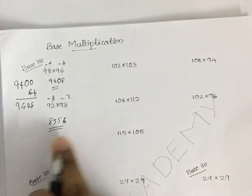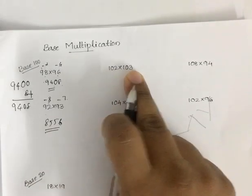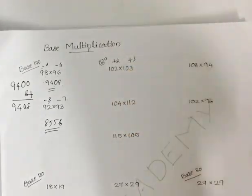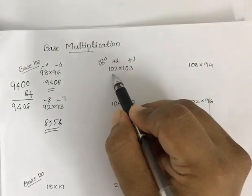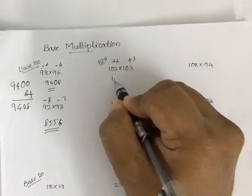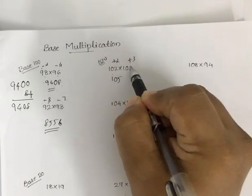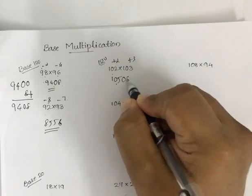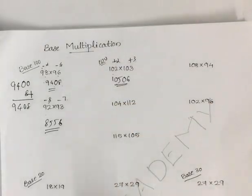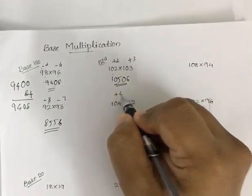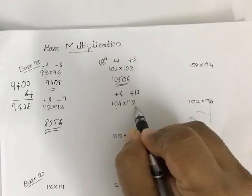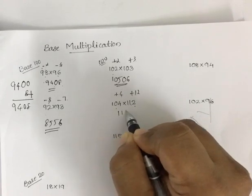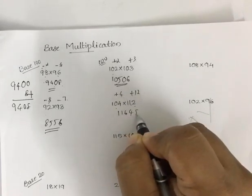This is also applicable when numbers are above 100. So if it is 102 into 103, I write plus 2 and plus 3. So 102 plus 3 is 105. Then 2 times 3 is 6 — you write it as 2 digits: 06. For 104 into 112, you write plus 4 and plus 12. 112 plus 4 is 116, and 4 times 12 is 48. So directly write the answer as 11648.